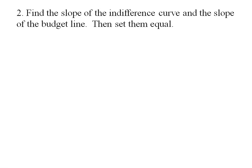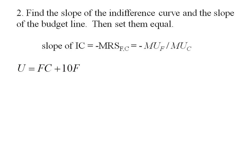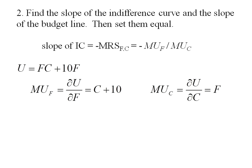Now let's find the slope of the indifference curve and set it equal to the slope of the budget line — this is the tangency condition. The slope of the indifference curve is the negative of the marginal rate of substitution, which equals −MU_F / MU_C. With utility U = F×C + 10F, the marginal utility of food is C + 10, and the marginal utility of clothing is F. So the slope of the indifference curve is −(C + 10) / F.